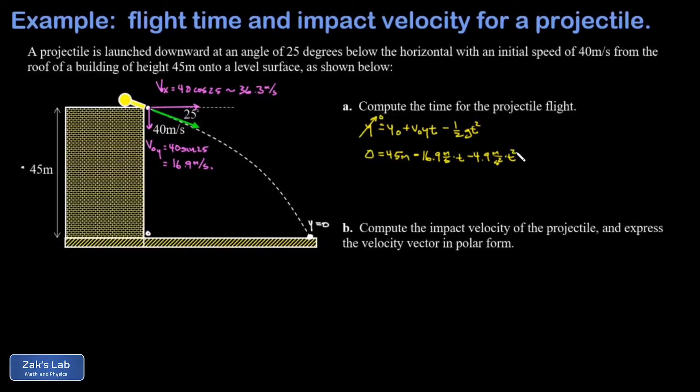This is a non-trivial quadratic equation and we need to solve it by using the quadratic formula. I would prefer to do that with a positive coefficient on the quadratic term, so I'm going to move every term to the other side of the equation. Now we're ready to plug into the quadratic formula where a is 4.9, b is 16.9, and c is negative 45.